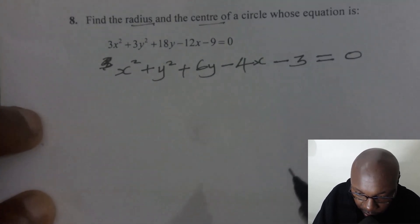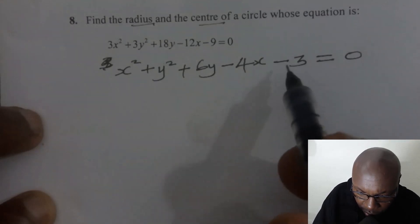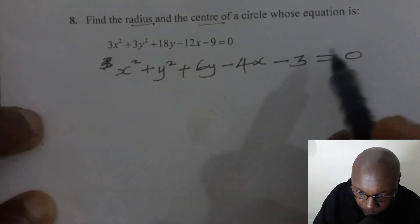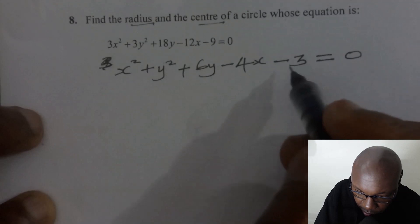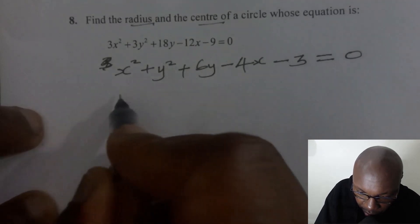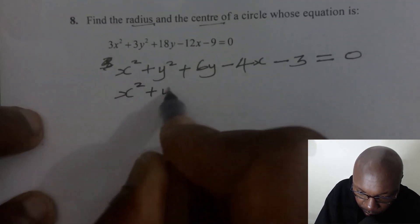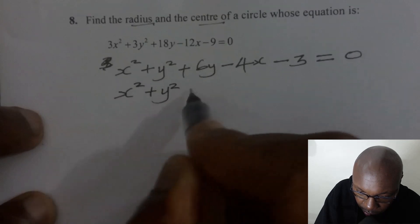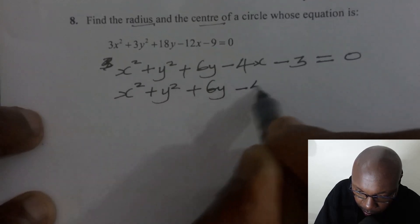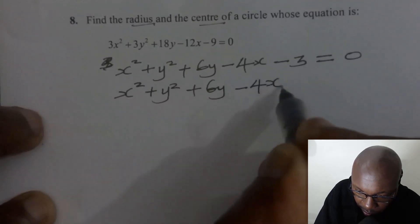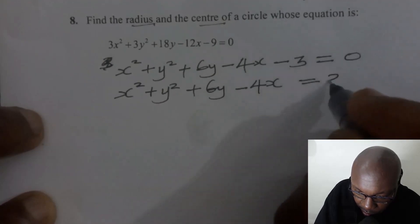Now after getting that, you can take the constant term to the right hand side. The constant term here is negative 3. So we have x squared plus y squared plus 6y minus 4x. When you take negative 3 to the right hand side, you get positive 3.